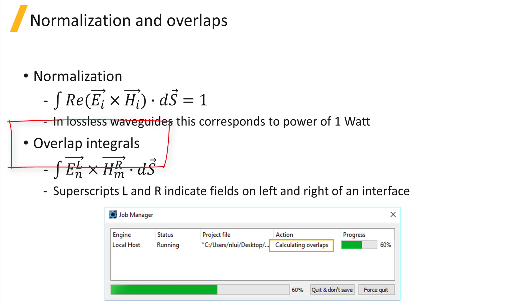Overlap integrals are calculated between the set of modes in each cell with the set of modes in their adjacent cells, and they take this form. As mentioned on the previous slide, the overlap integrals facilitate the calculation of the transmission and reflection coefficients for each incident mode on the interface.